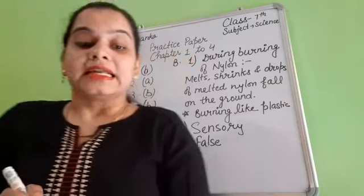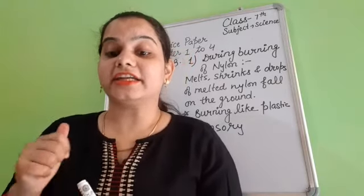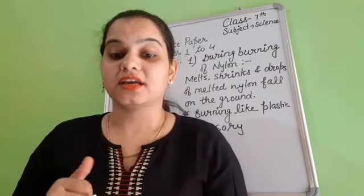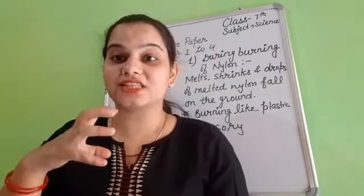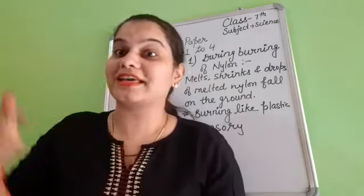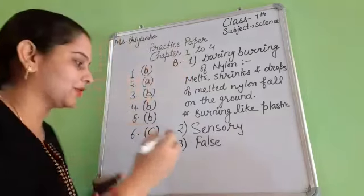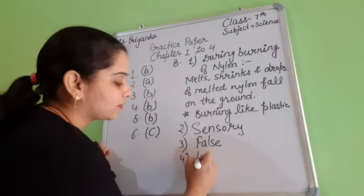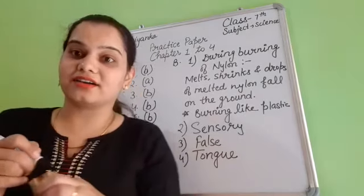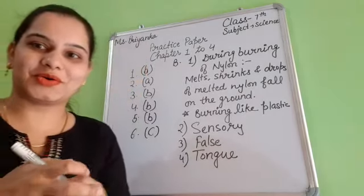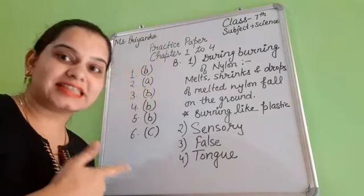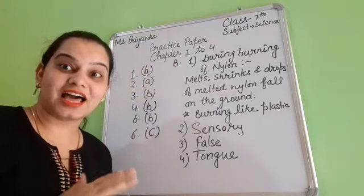Next: dash helps to detect different tastes of food with the help of taste buds — yanne ki joh food ka taste hota hai, voh taste buds detect karti hain. Toh voh taste buds kis ke upar hota hai? Yes, tongue ke upar. So tongue help karti hai kyunki tongue ke upar taste buds hota hai. Right answer is tongue — T-O-N-G-U-E. Okay? If you want to capture a screenshot, you can take it, otherwise I'll rub the board.